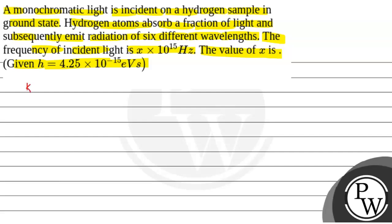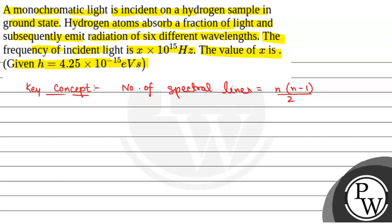We will solve this question. First, we will see what the key concept is to solve this question. The key concept that will be used is the number of spectral lines, which is given by n(n minus 1) by 2, where n is the number of the higher orbit and the electron transition takes place from orbit n2 equal to n, and n1 is equal to 1.